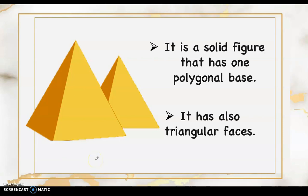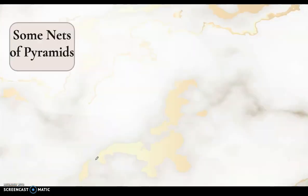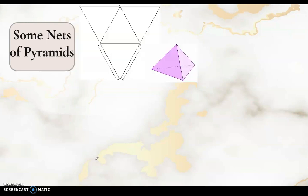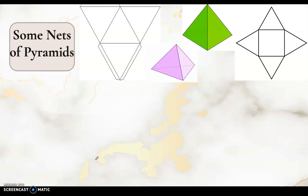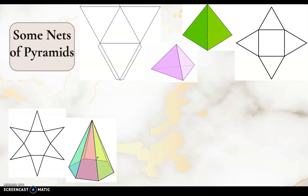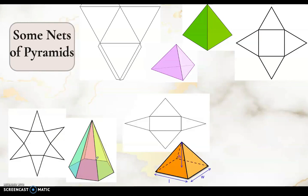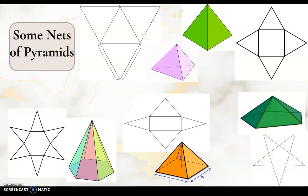Here are some nets of pyramids. We have a triangular pyramid because the base is a triangle with three triangular faces, a square pyramid, a hexagonal pyramid since the base is a hexagon with six triangular faces, a rectangular pyramid, and a pentagonal pyramid — and many more kinds or names of pyramids depending on the base.